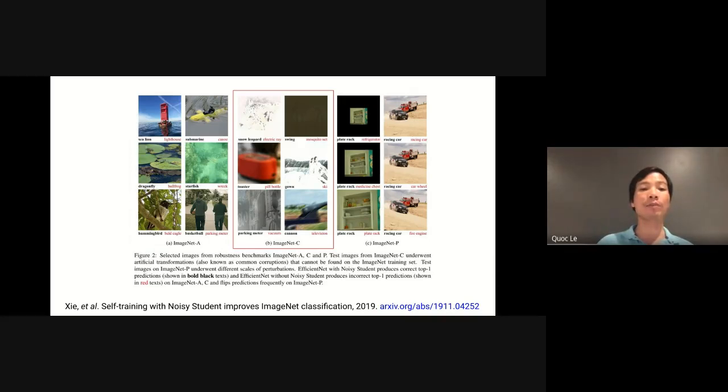In the middle, we have images from the ImageNet-C test set, which are artificially transformed by adding noise. For example, the top-left image is a snow leopard, but it is brightened in such a way that many classifiers recognize it as an electric ray. On the right, we have images from the ImageNet-P dataset, which are transformed into a video sequence from a target image. As the images are transformed, the classifier flips the prediction from plate rack at the bottom to medicine chest in the middle and then refrigerator at the top. In other words, the classifier flips its prediction and is not robust to small transformations in the input image.